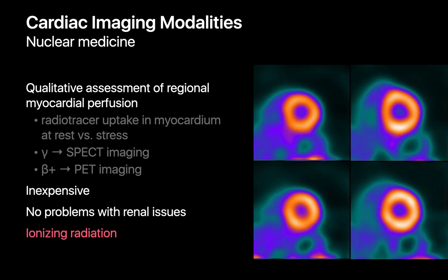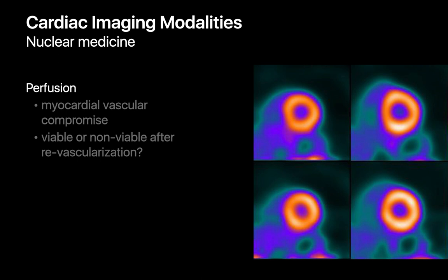Cardiac nuclear studies are inexpensive and, unlike most cardiac CT studies, don't impart any renal risks since we're not using iodinated contrast. However, like CT, cardiac nuclear studies do expose patients to ionizing radiation. They provide perfusion information about the heart, helping us identify regions where the vascular supply of left ventricular myocardium may be compromised and showing us what regions of myocardium may or may not benefit from coronary artery bypass surgery.